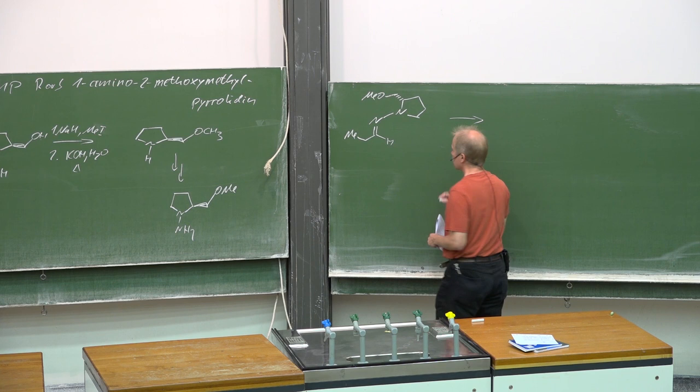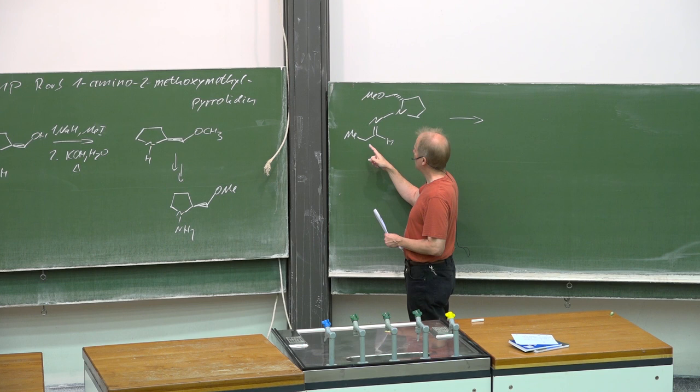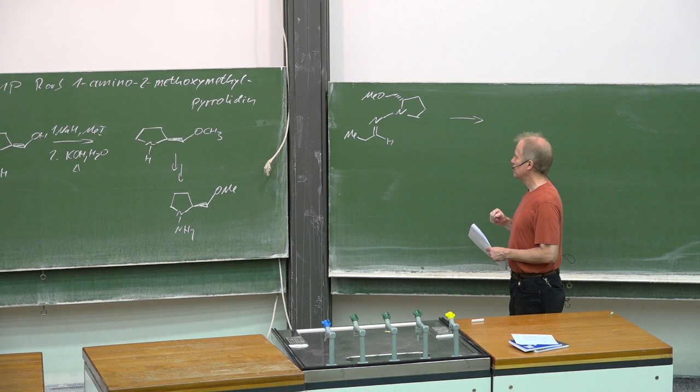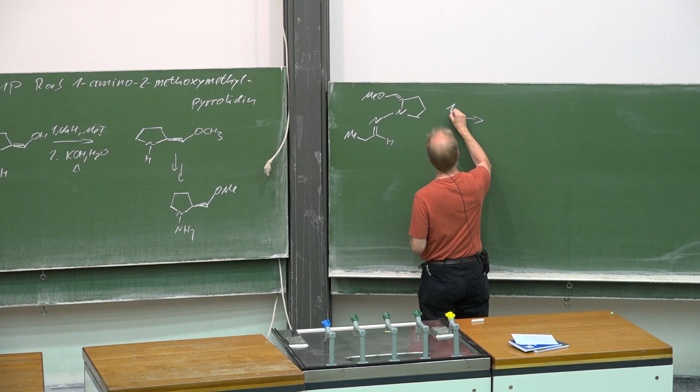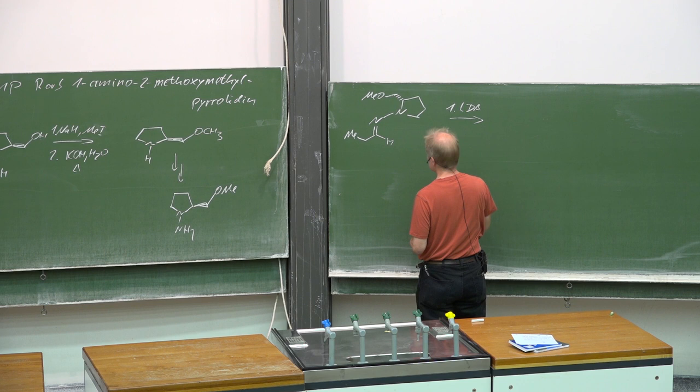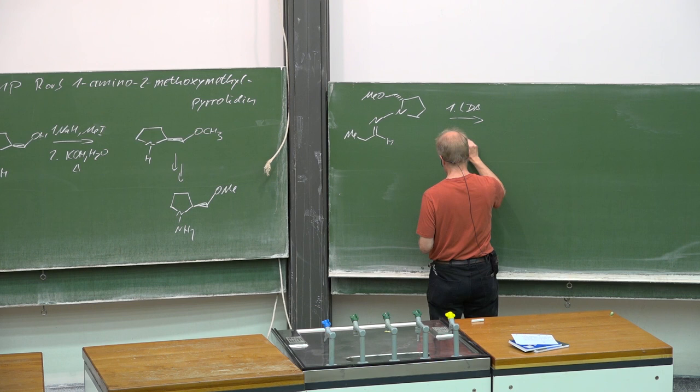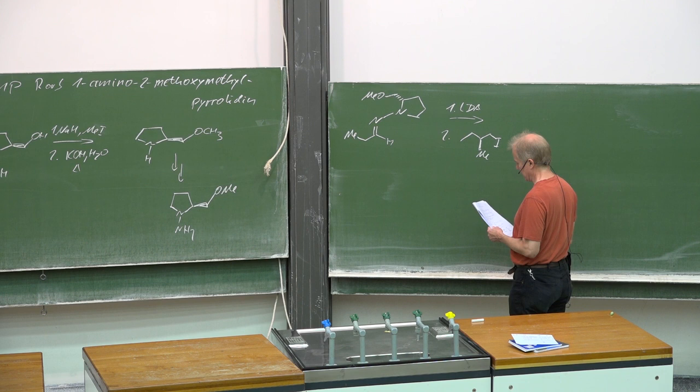Then with LDA it is deprotonated alpha to the imine, and the methoxy group is chelating the lithium salt of the enamine. First step, LDA deprotonating as I said. Second step, just the C-alkylation of the enamine, in this case with an already chiral alkyl iodide.